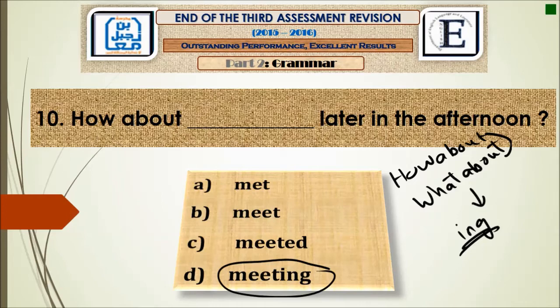Question number ten: 'How about ___ later in the afternoon?' How about and what about are both followed by the ing form. So the answer is meeting: 'How about meeting later in the afternoon?'